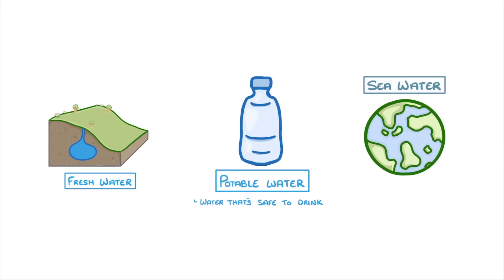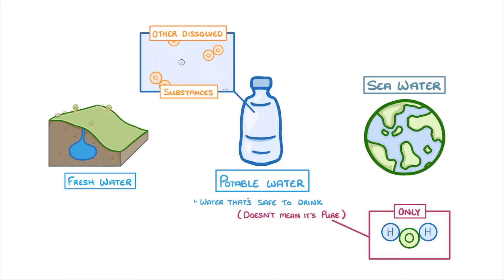Although potable water is by definition safe to drink, that doesn't mean that it's pure. In chemistry, pure water would have to contain only H2O molecules, whereas potable water often contains other dissolved substances which makes it impure.